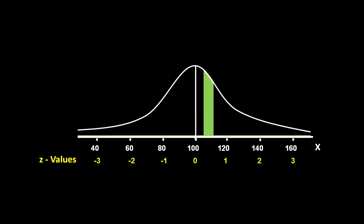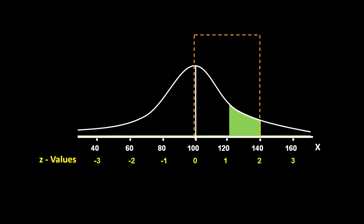What is the probability that X takes a value in the range 120 to 140? We know the probability value between 0 and 2 is 0.4772, and the probability value between 0 and 1 is 0.3413. Hence, the probability of X taking a value in the range 120 to 140 is 0.4772 minus 0.3413, which equals 0.1359.